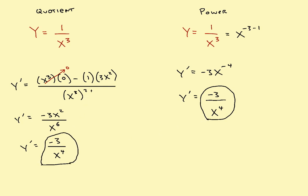So just be aware that there's more than one way to solve a lot of these problems. You can choose whichever method you think is easier, as long as it's correct. And those are some examples of the quotient rule.